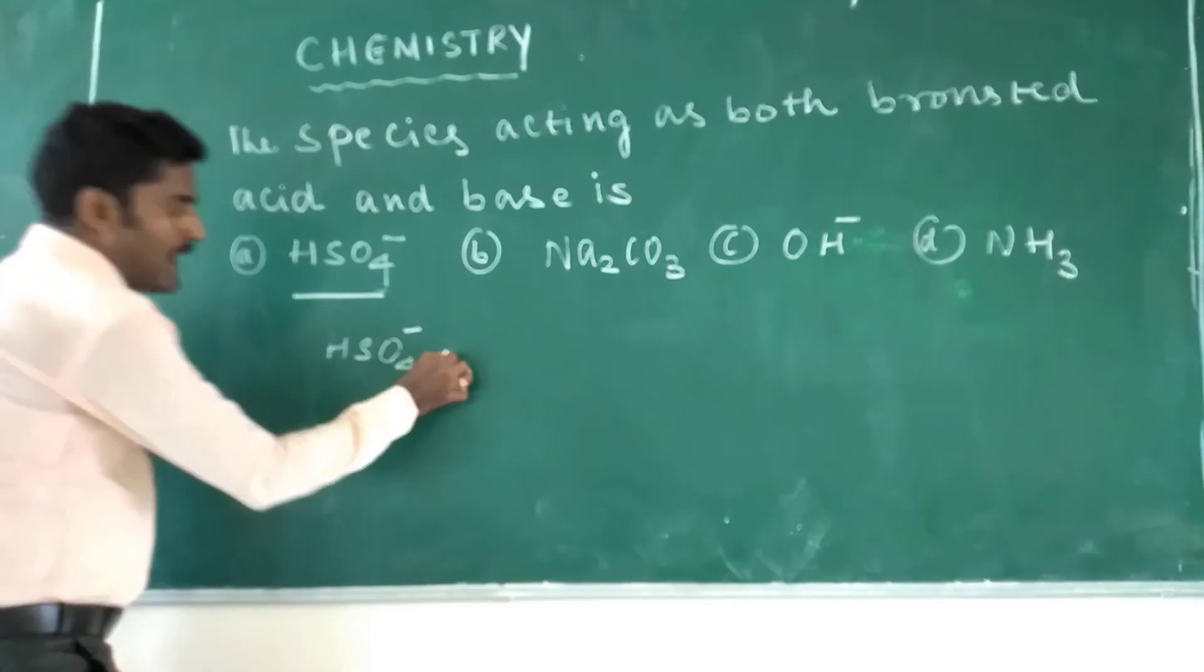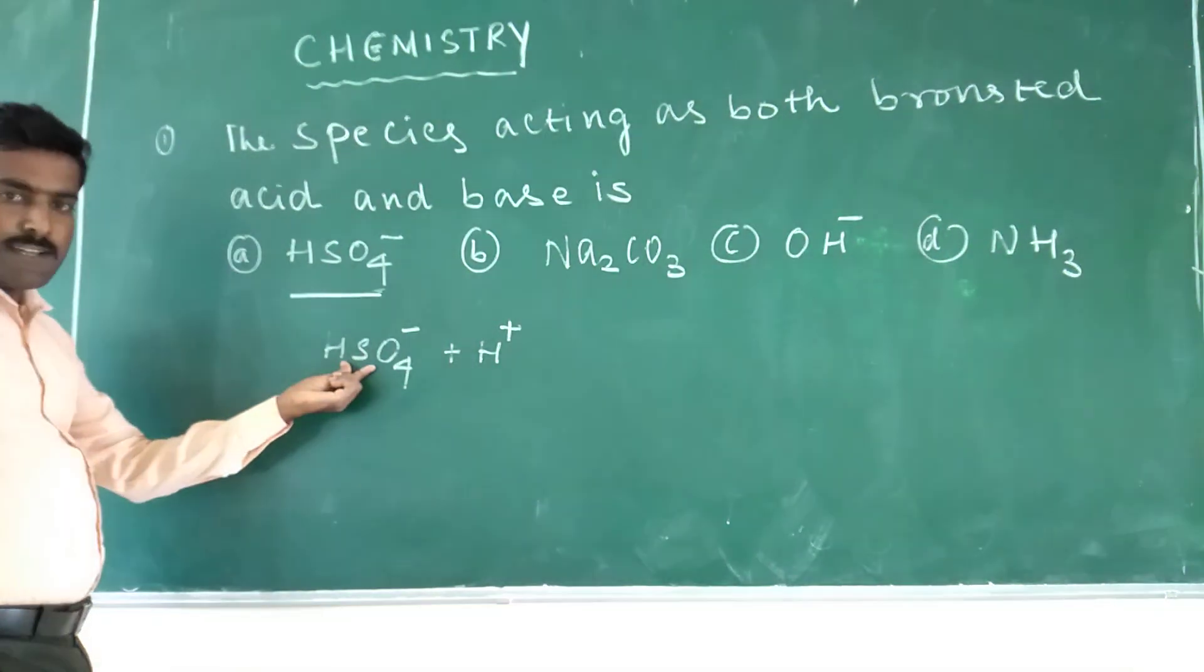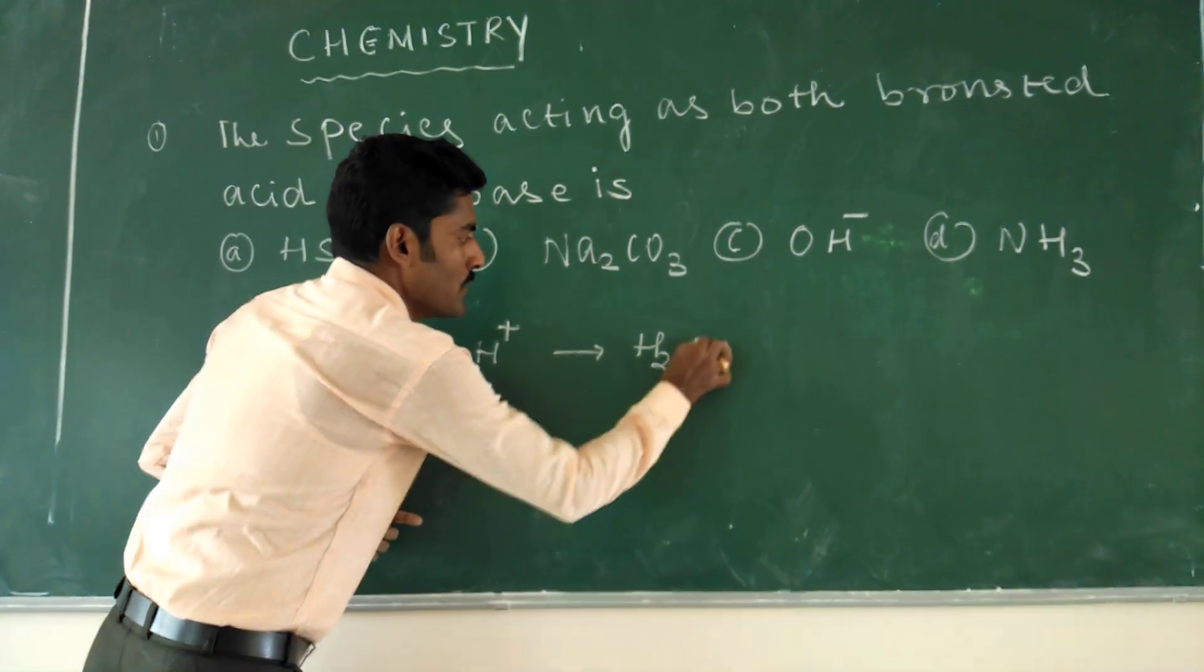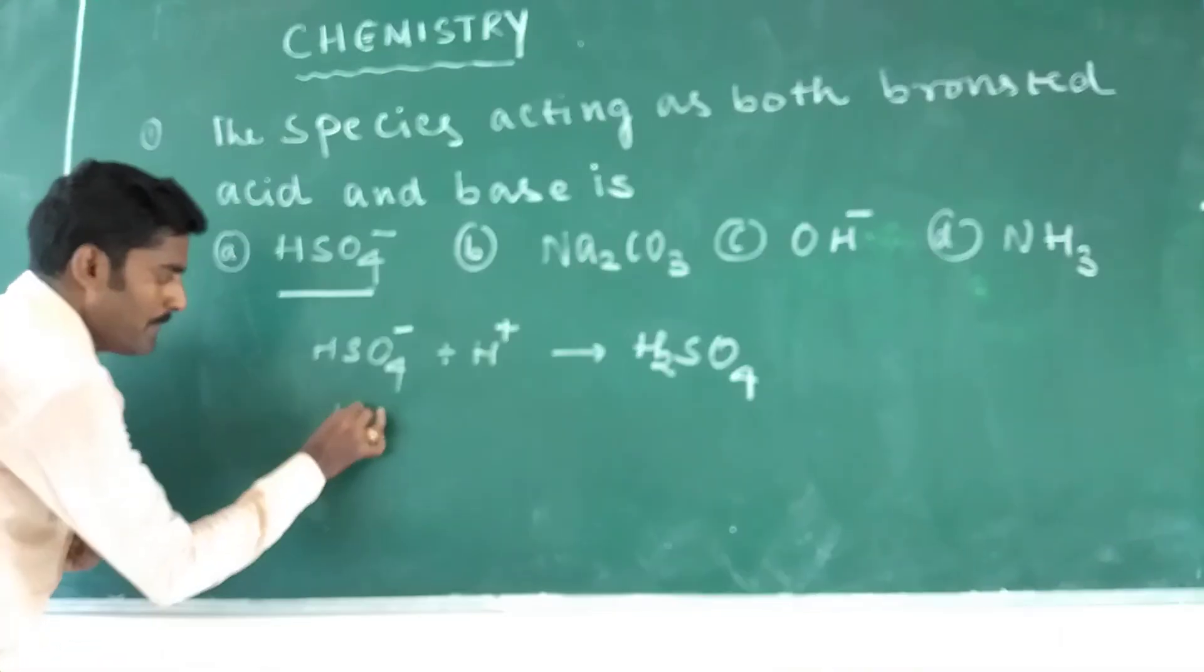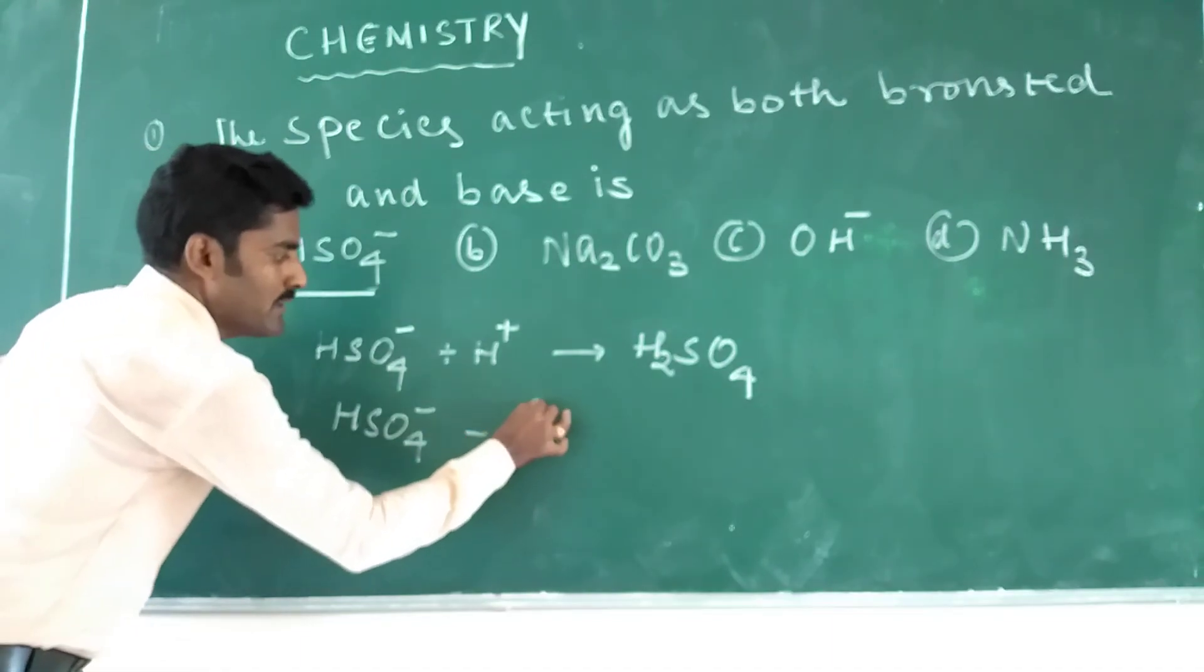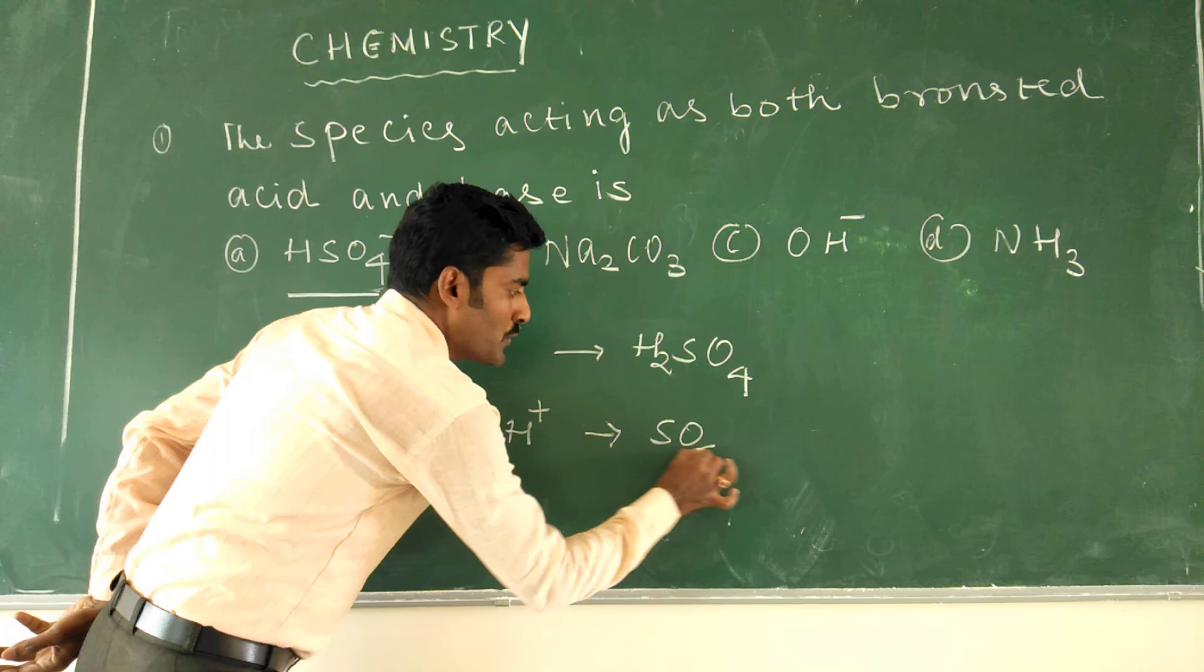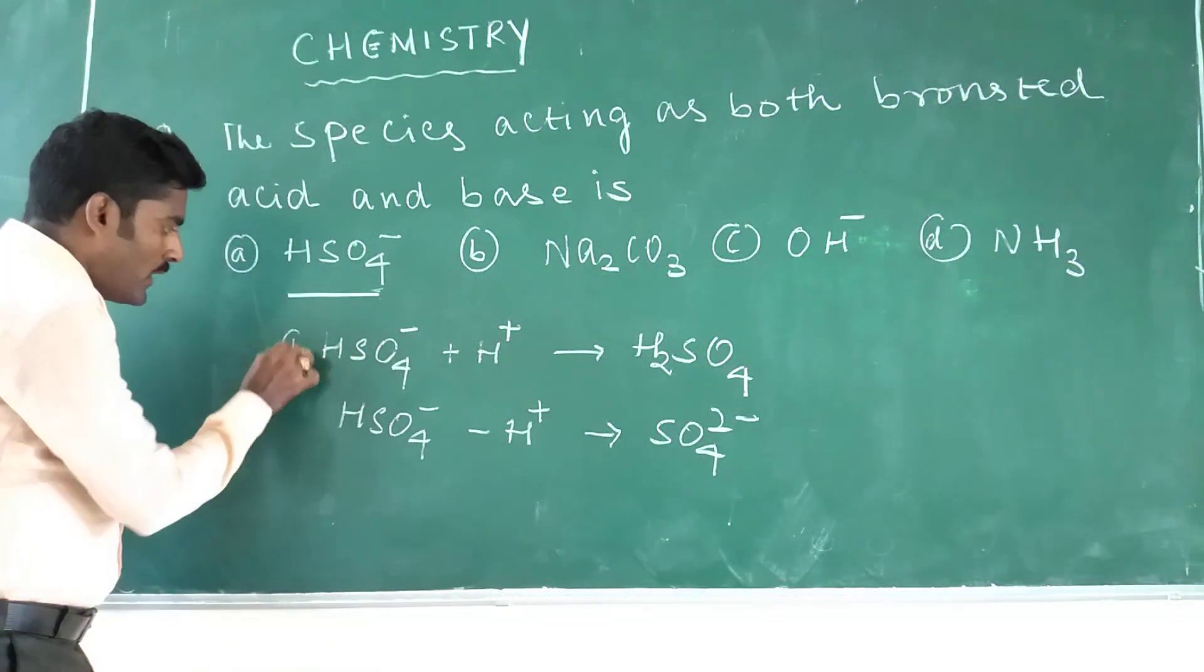So here, suppose if you take hydrogen sulfate, HSO4-. Suppose if I add one H+ ion, so HSO4- gains one hydrogen ion to form sulfuric acid, H2SO4. Similarly, HSO4- ion if it loses one H+ ion, it is forming SO4 2- minus sulfate ion.